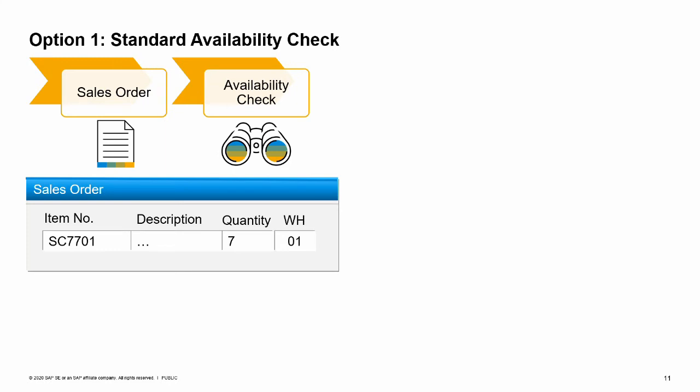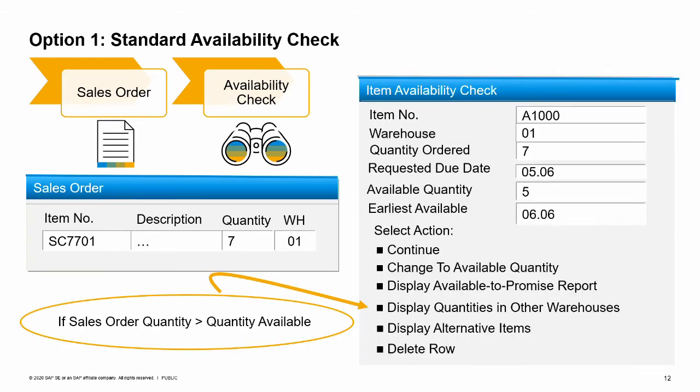Let's look at the first option, the standard SAP Business One availability check. Whenever you create a sales order and enter a quantity for an item which is greater than the available quantity for this item minus the minimum inventory level on the delivery date, the item availability check window comes up automatically. The salesperson has entered the scanner item with a quantity of seven, but only five are available. The item availability check window pops up, displaying the quantity of seven ordered in the sales order and the quantity available in inventory.